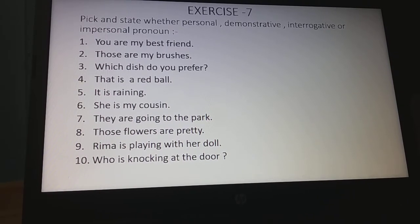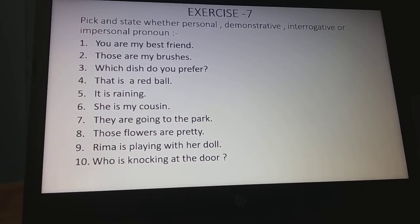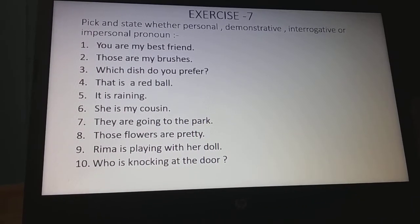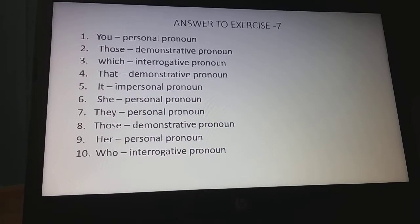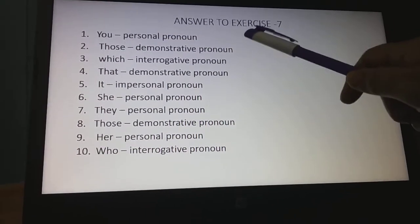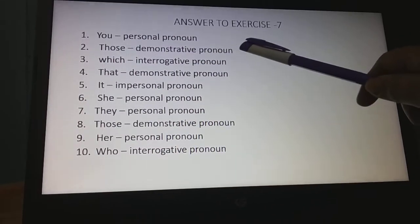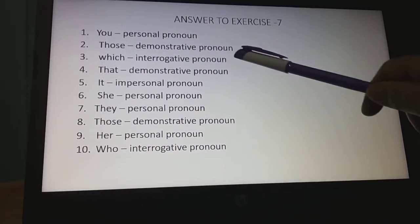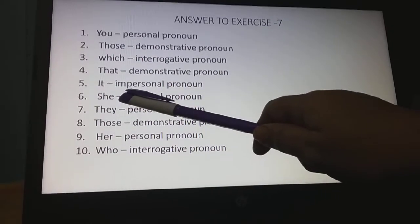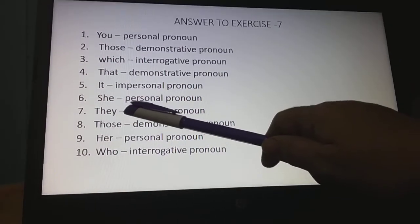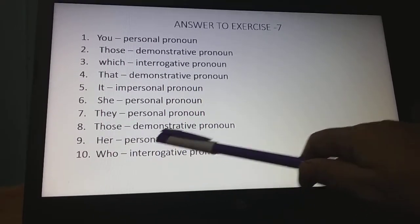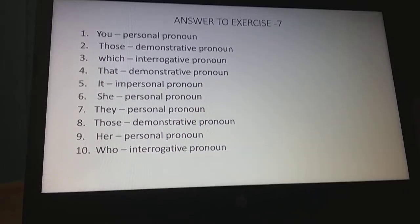Quickly copy these sentences and write the answers. Now check your answers. Number one: you — personal pronoun. Number two: those — demonstrative pronoun. Number three: which — interrogative pronoun. Number four: that — demonstrative pronoun. Number five: it — impersonal pronoun. Number six: she — personal pronoun. Number seven: they — personal pronoun. Number eight: those — demonstrative pronoun. Number nine: her — personal pronoun. Number ten: who — interrogative pronoun.